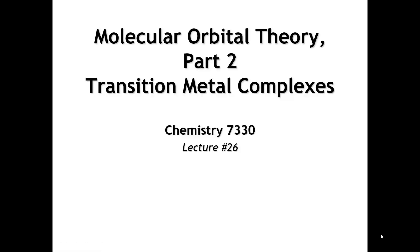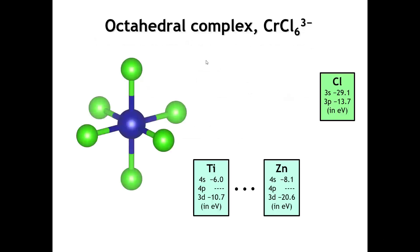In this lecture, we continue our brief overview of molecular orbital theory with a look at transition metal complexes that have octahedral and tetrahedral symmetry. Let's think about, as a model system, this complex ion, chromium hexachloride 3-.